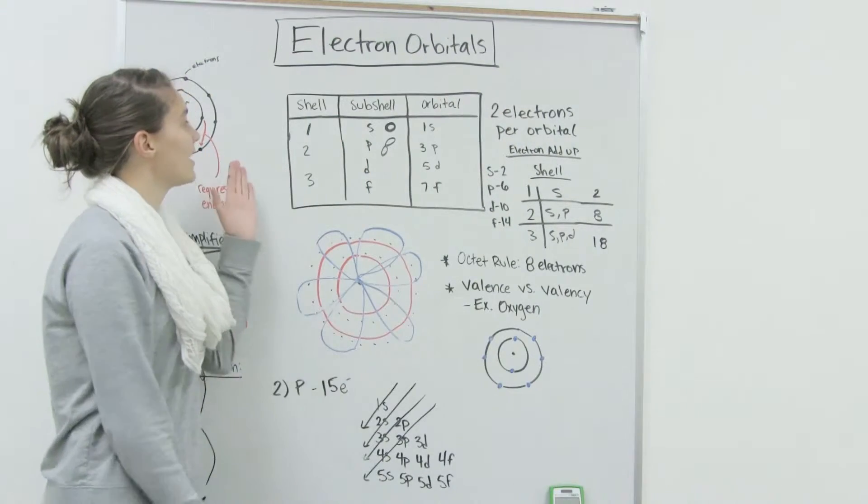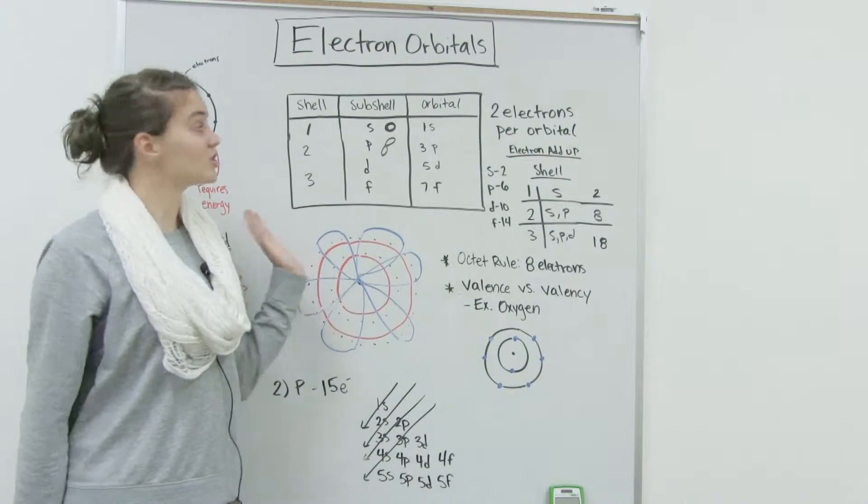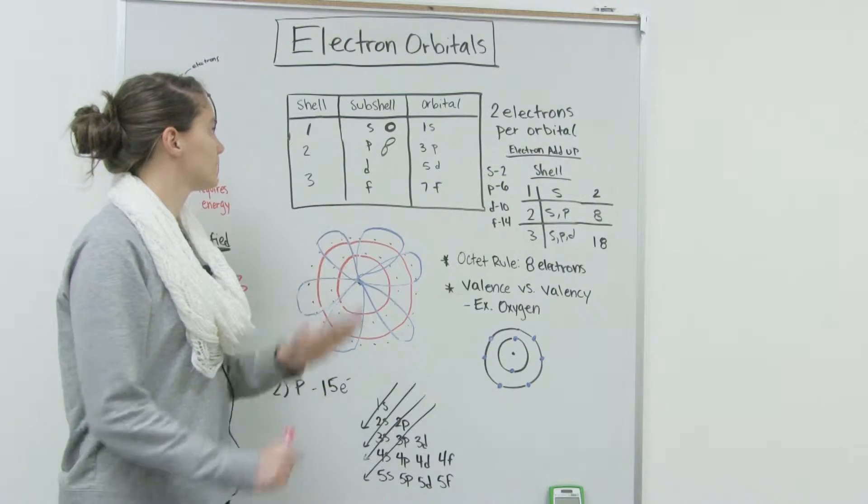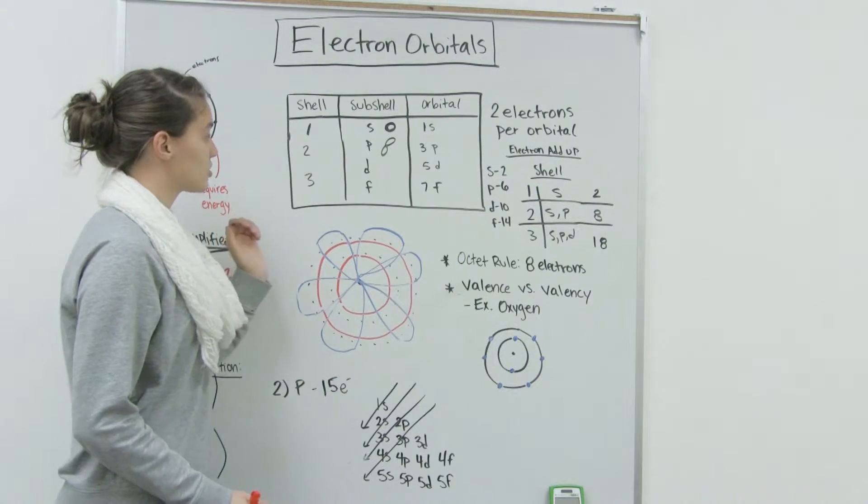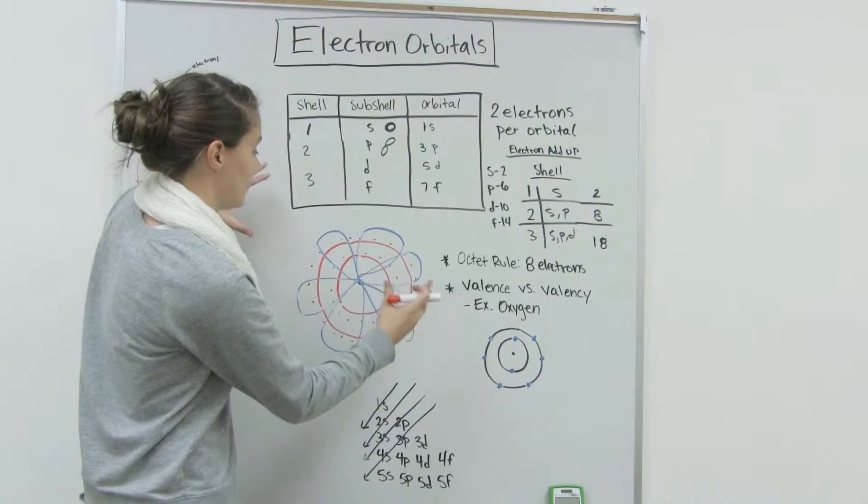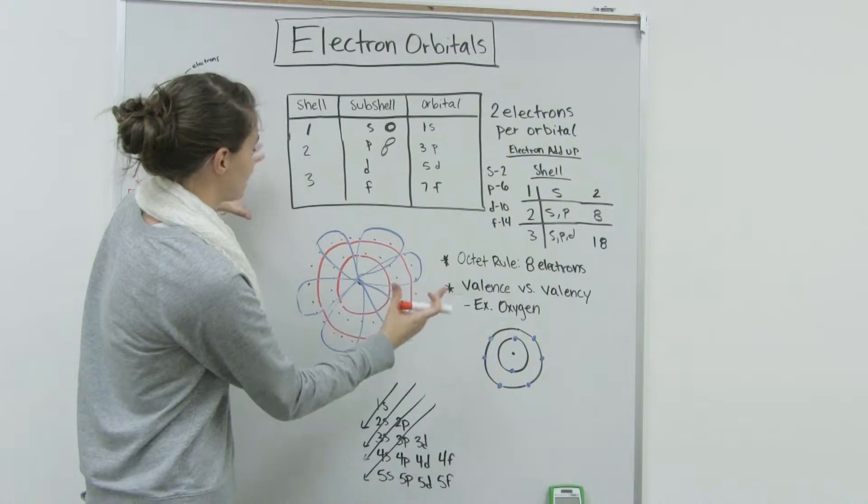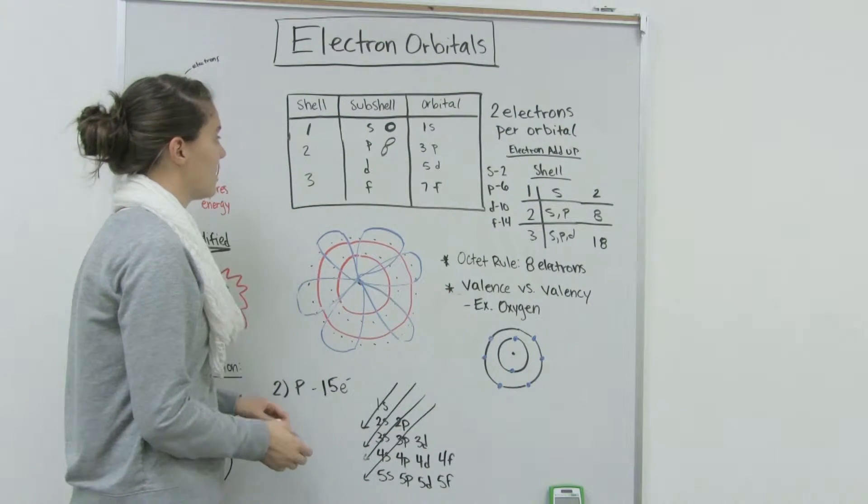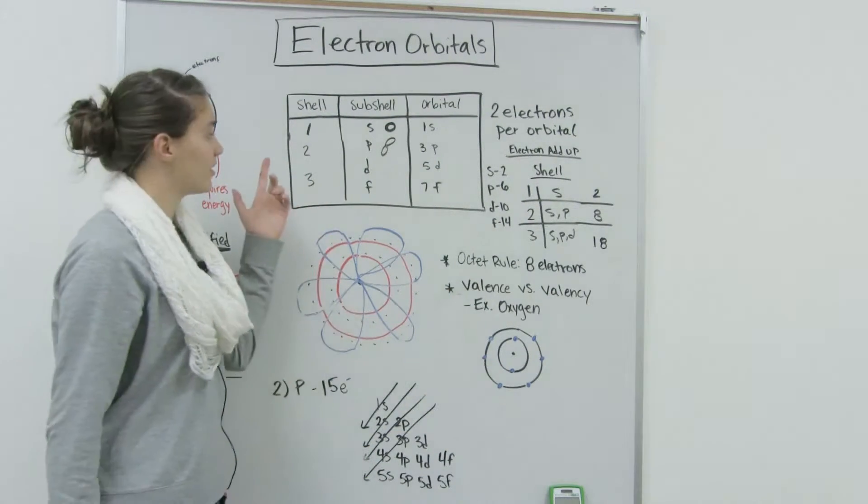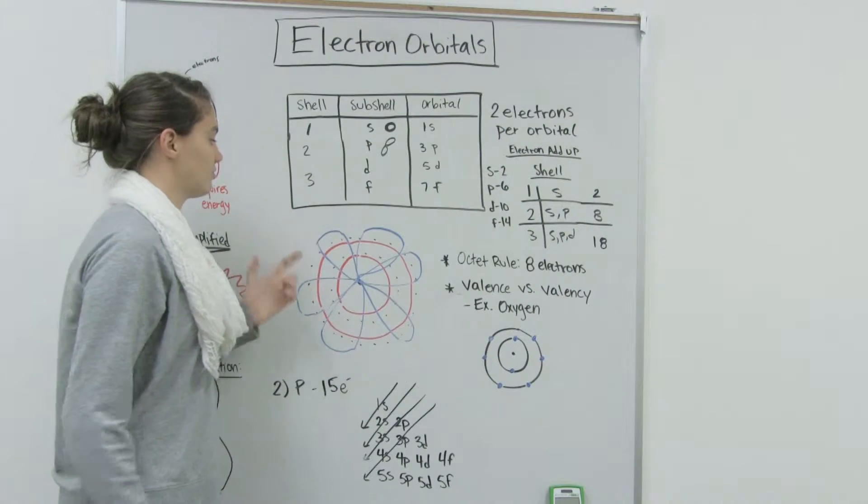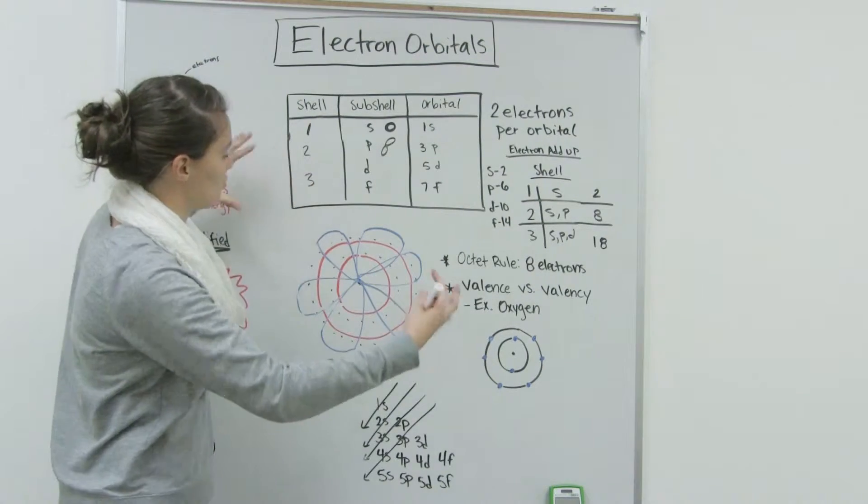So let's try to clarify the difference between a shell, a subshell, and an orbital. A shell describes the distance, like the space outside of the nucleus. So they're classified by numbers, 1, 2, 3, 1 being the closest, 2 being farther away.